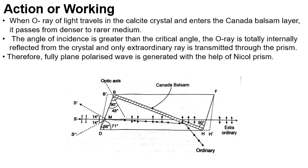When the O ray travels through the calcite crystal and enters the Canada balsam layer, it passes from a denser to a rarer medium, and the angle of incidence is greater than the critical angle. Therefore, the O ray is totally internally reflected and only the extraordinary ray is transmitted through the prism, generating fully plane polarized light, as shown in the figure.